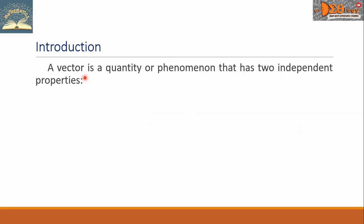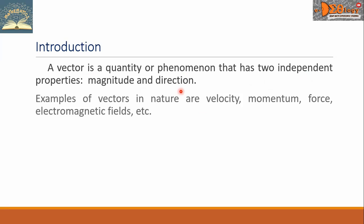A vector is a quantity or phenomenon that has two independent properties: magnitude and direction. Examples of vectors in nature are velocity, momentum, force, electromagnetic fields, etc.